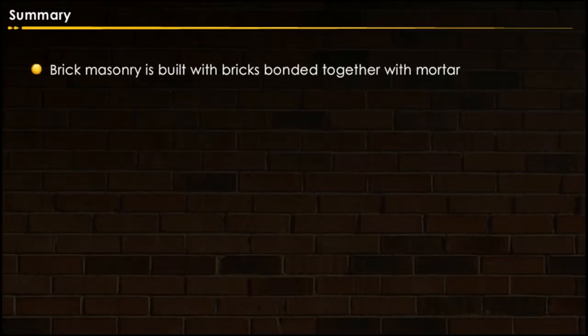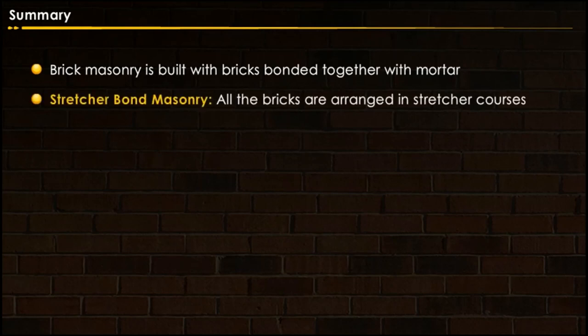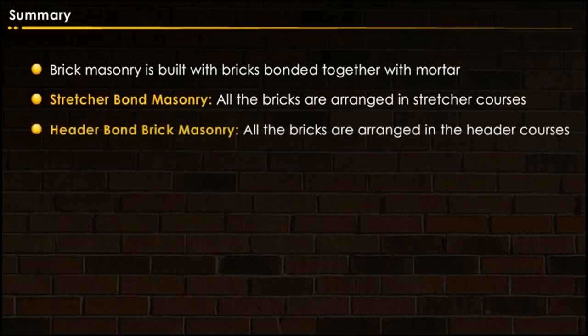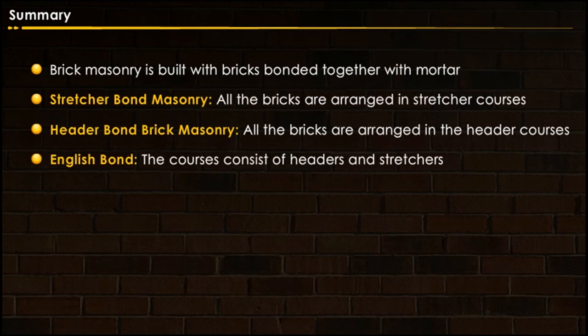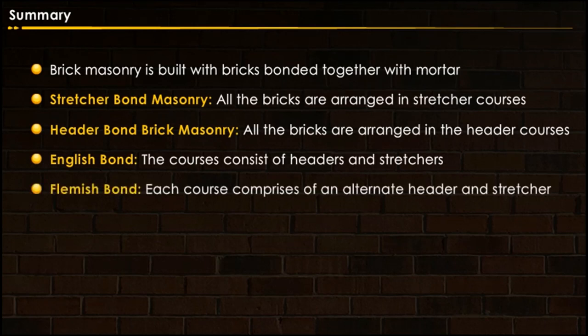Let us summarize what we have learned in this lesson. Brick masonry is built with bricks bonded together with mortar. In stretcher bond masonry, all bricks are arranged in stretcher courses. In header bond, all bricks are arranged in header courses. English bond courses consist of headers and stretchers. In Flemish bond, each course comprises alternate headers and stretchers.